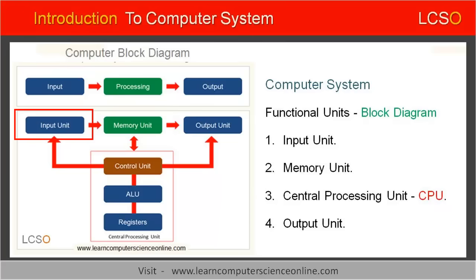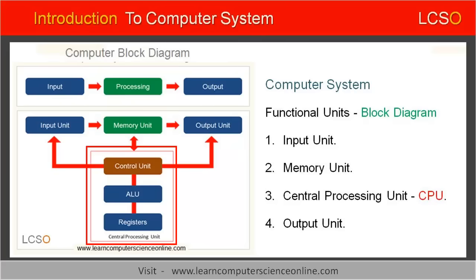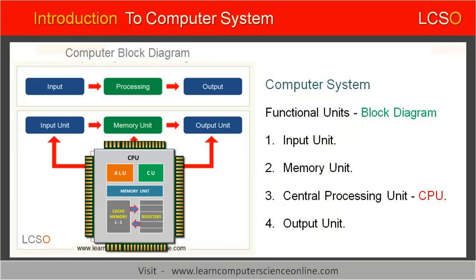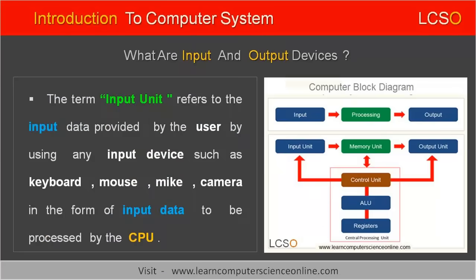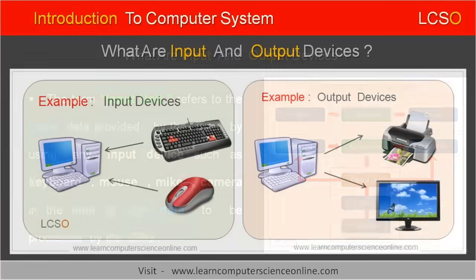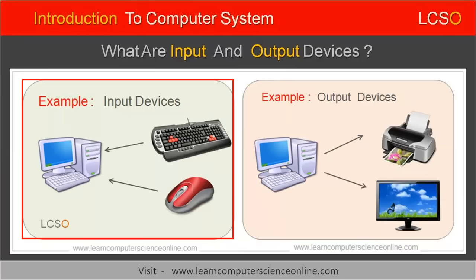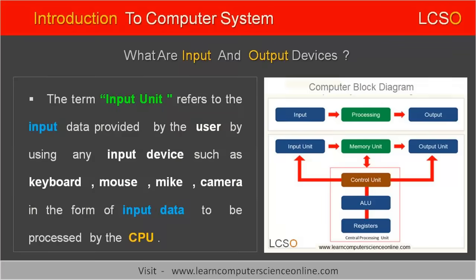The four major units of the computer are: first, the input unit; second, the memory unit; third, the central processing unit, also commonly referred to as CPU; and fourth, the output unit. The input unit consists of various input devices connected to the computer system, such as keyboard, mouse, and scanner. The main function of the input unit is to accept the data received from the input devices.